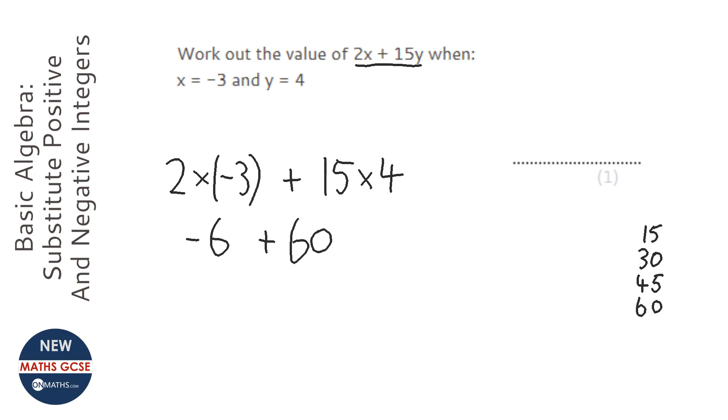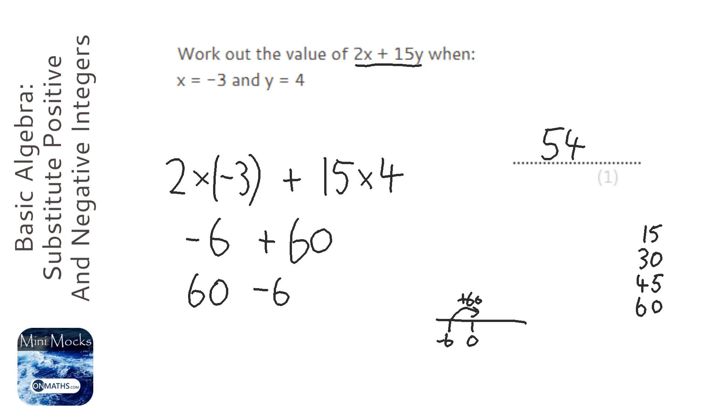Now you can use your number line here, go to minus 6 on your number line, and then you want to add 60. Or you can just change this so it's 60 take away 6, and it gives you the same answer, which is 54. That's all. Thank you.